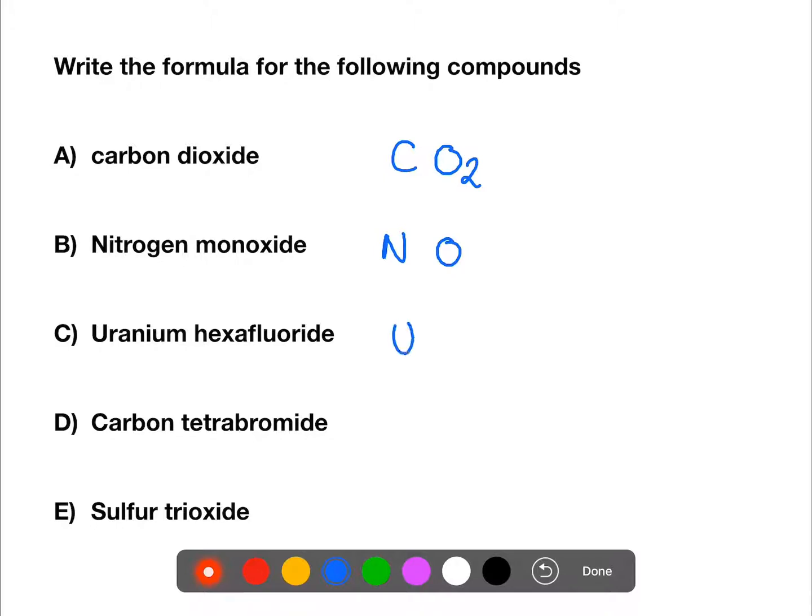For C, we have uranium which is U, and hexafluoride which is F. We have no prefix for uranium so we leave it as one, and hexa is six for the fluoride.